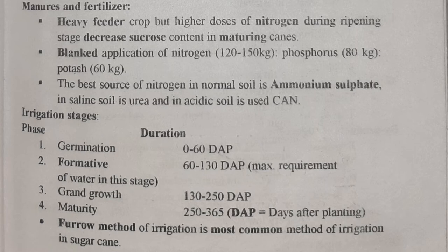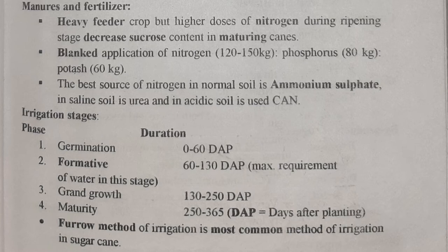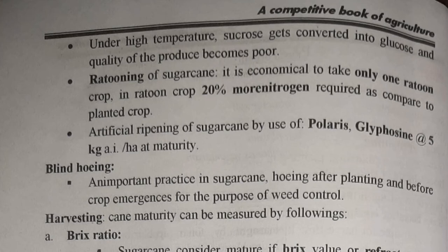Irrigation stages: the critical stage is the formative stage. Germination stage is 0 to 60 days after planting; formative stage is 60 to 130 days — maximum water should be given at this time; grand growth stage is 130 to 250 days; maturity is 250 to 365 days after planting. The furrow method is the most common irrigation method for sugarcane, used in both North and South India. At high temperatures, sucrose converts to glucose, making quality of the product poor.